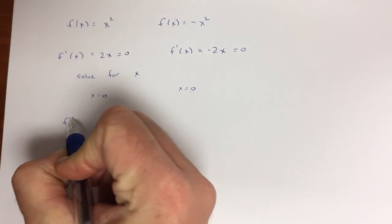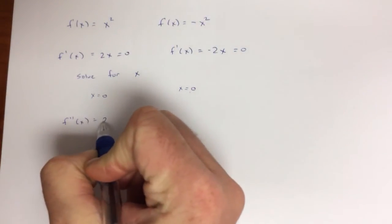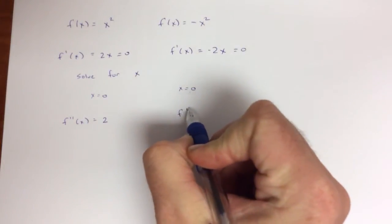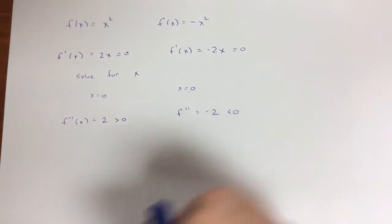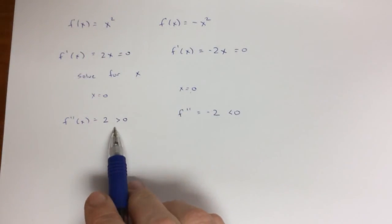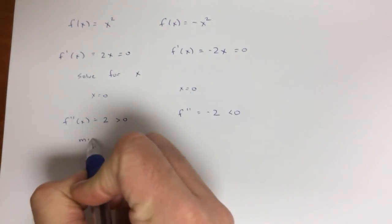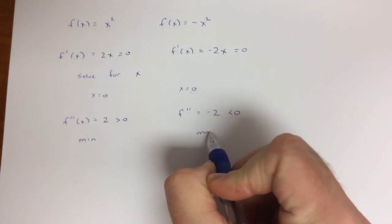I need to take that second derivative to show that this is 2. Second derivative to show that this is negative 2, which is greater than zero. And this is less than zero. So as a result, this is a minimum. This is a relative maximum.